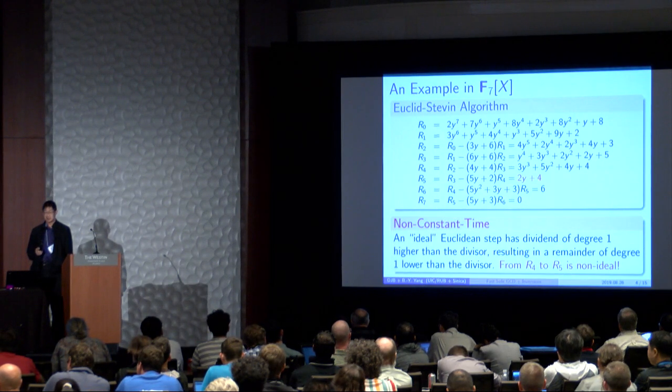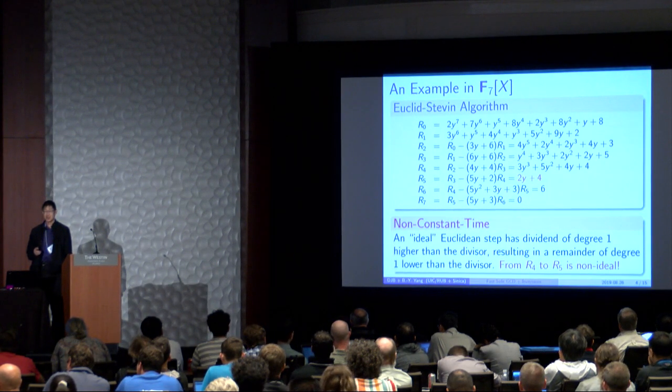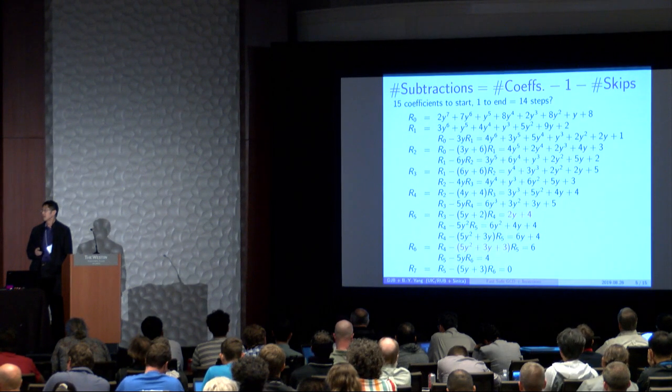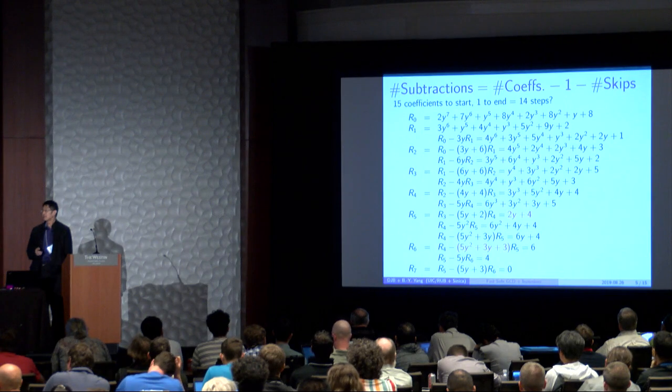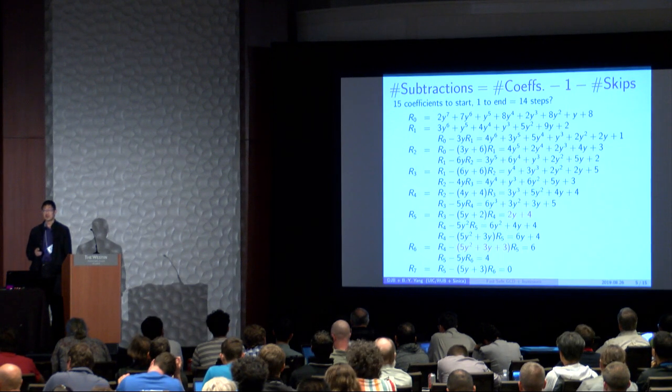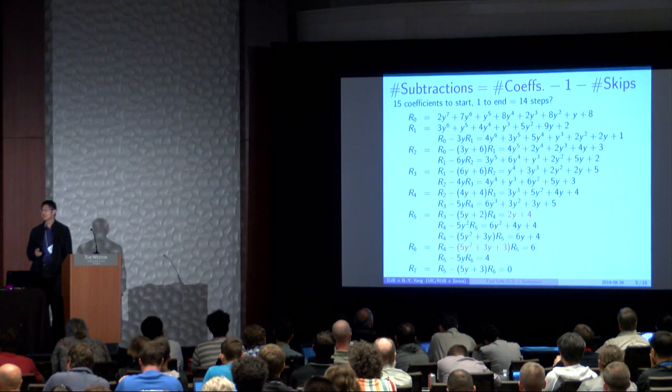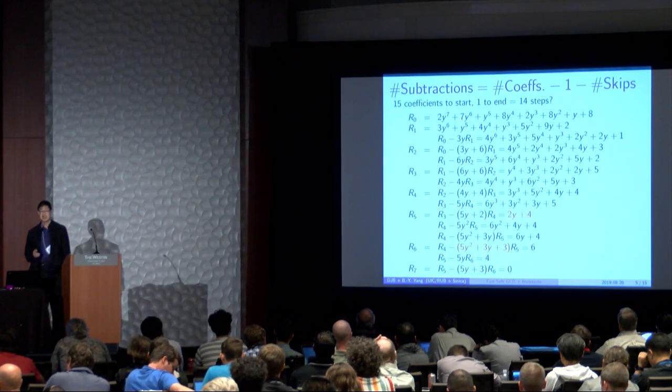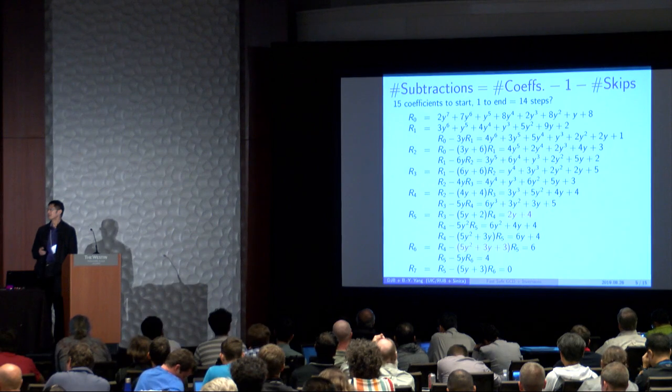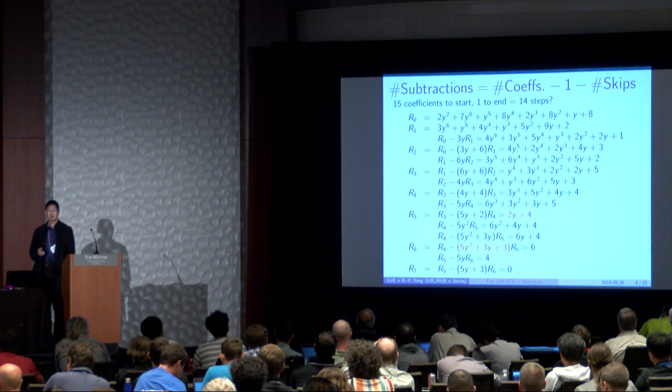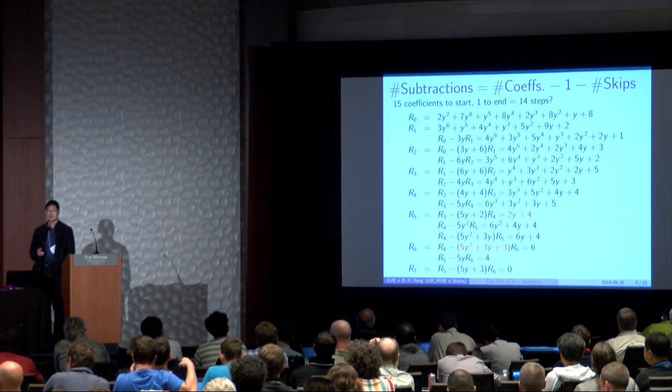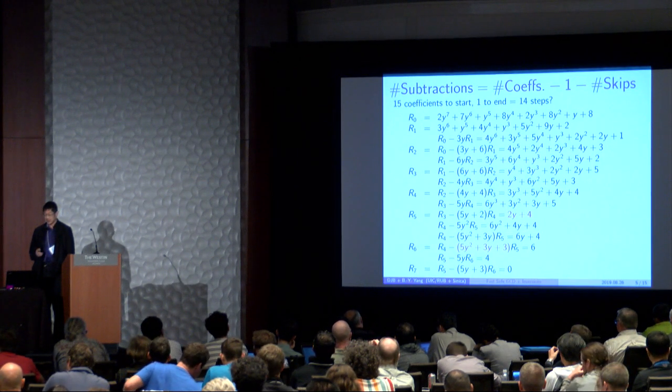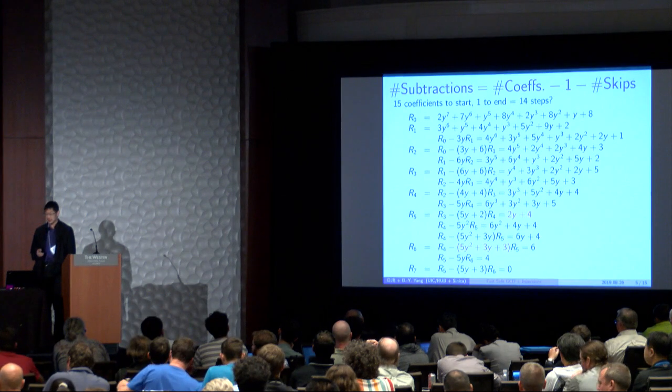And the remainder is one degree lower than the divisor. But here, there is one step that's not ideal. So what does this mean? So if we look at this as a sequence of subtractions, there are 15 coefficients, and we want to reduce it to one coefficient, the constant. So there should be 14 steps, but there is one skip. So now there are 13 steps. The number of steps depends on the number of imperfections in our Euclidean sequence.